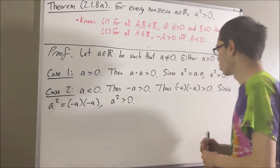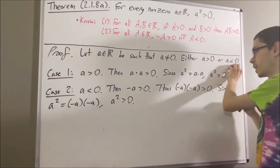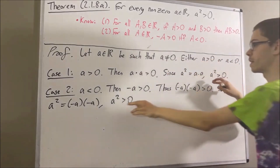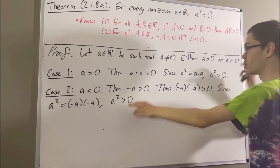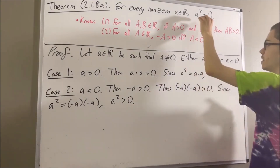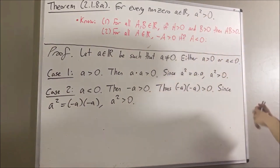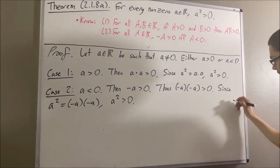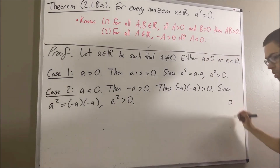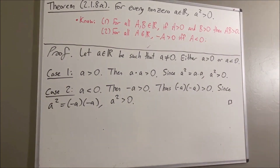No matter which case holds, we have that a squared is greater than zero. So we have proven that a squared is greater than zero, which is exactly what we wanted to prove — this completes the proof. And that's pretty much it for this video.